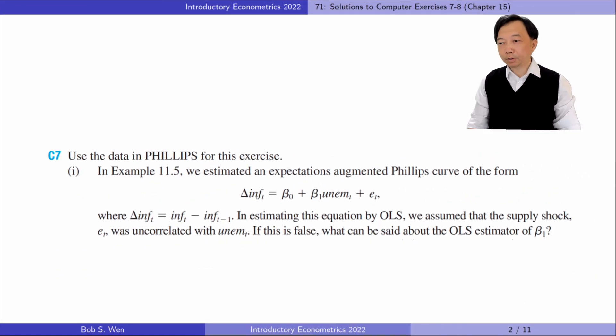For exercise 7, part 1 is about the expectations augmented Phillips curve. In estimating this equation by OLS, we assume that the supply shock ET was uncorrelated with unemployment T. If this is false, what can be said about the OLS estimator of beta 1?